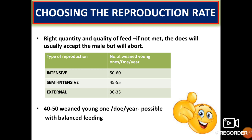In intensive reproduction, the doe is served immediately after kindling and young ones are weaned by 4 weeks. Always keep in mind that right quantity and quality of feed must be met; otherwise the doe will usually accept the male but will abort. It is possible to produce 50 to 60 young ones per doe per year in an intensive system, 45 to 55 in semi-intensive, and 30 to 35 in extensive. With balanced feeding, 40 to 50 weaned kits per doe per year can be obtained by combining intensive and semi-intensive systems.